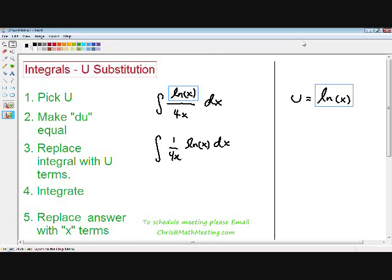Here we have the natural log of x divided by 4x dx. Now I hope you guys can realize that this problem cannot be solved using the basic method, so we need to integrate this problem using u substitution.